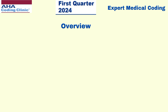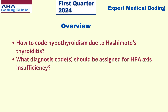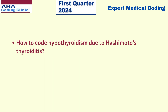In this video, we are going to cover two coding clinics: how to code hypothyroidism due to Hashimoto's thyroiditis, and what diagnosis code should be assigned for HPA axis insufficiency. So let's get started with the first one.